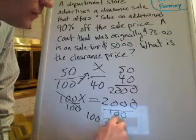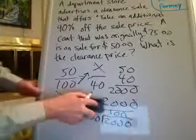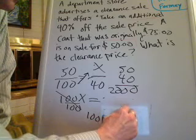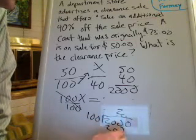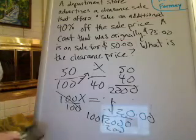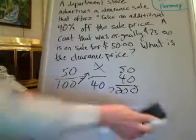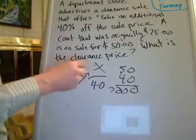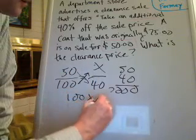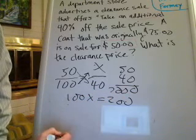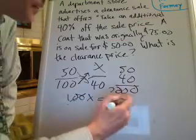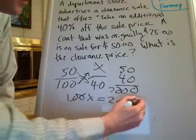100 goes into 2000: 100 goes into 200 two times, and the remainder is zero, giving us 20. The shortcut method Fermi and I discussed: starting from 100X equals 2000, I just lop off matching zeros from both sides — one zero from 100 and one zero from 2000 — and I get X equals 20 bucks.